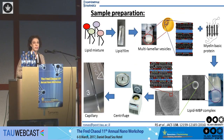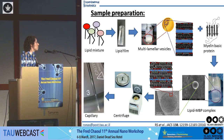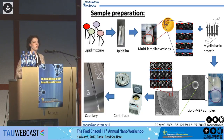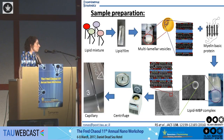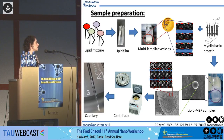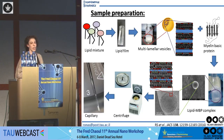To prepare the samples, I mix all the lipids together in the desired ratio, evaporate the liquid to end up with the lipid film. After swelling the film with the desired buffer solution — so we can control the salt concentration and pH — and adding myelin basic protein, we get multi-lamellar vesicles and onion-shaped structures of lipid and protein complexes in solution. I take a small amount of the solution into a quartz capillary, centrifuge it to get a nice-looking pellet, and then take all these capillaries to a synchrotron facility.